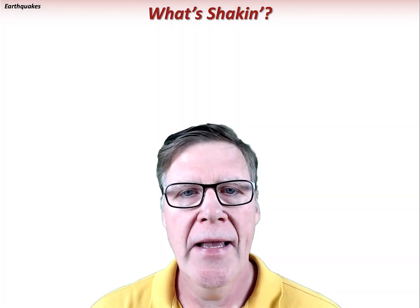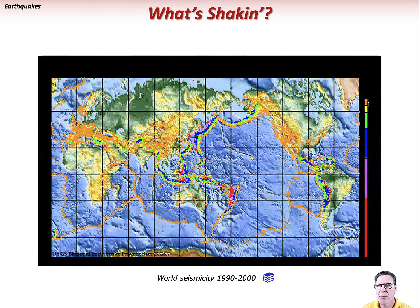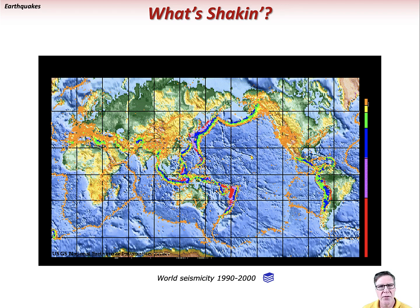Earthquakes occur all over the planet and at all different depths. This map shows the distribution of earthquakes worldwide over a 10-year period from 1990 to 2000, color-coded to show depth. The earthquakes are not uniformly distributed but clustered into certain areas and zones, with some being more shallow (orange and yellow) and others very deep (purple and red). Once enough seismic data had been collected by the mid-20th century, these simple observations led in part to the original development of plate tectonic theory.